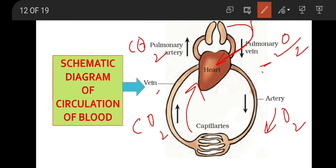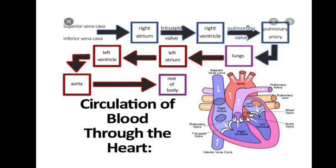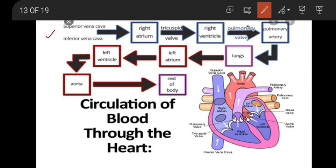Looking at the detailed diagram: the superior and inferior vena cava collect deoxygenated blood and bring it to the right atrium. From the right atrium, blood goes to the right ventricle through the tricuspid valve. This valve acts like a one-way door, allowing blood to flow only from atrium to ventricle — blood cannot go back from ventricle to atrium.